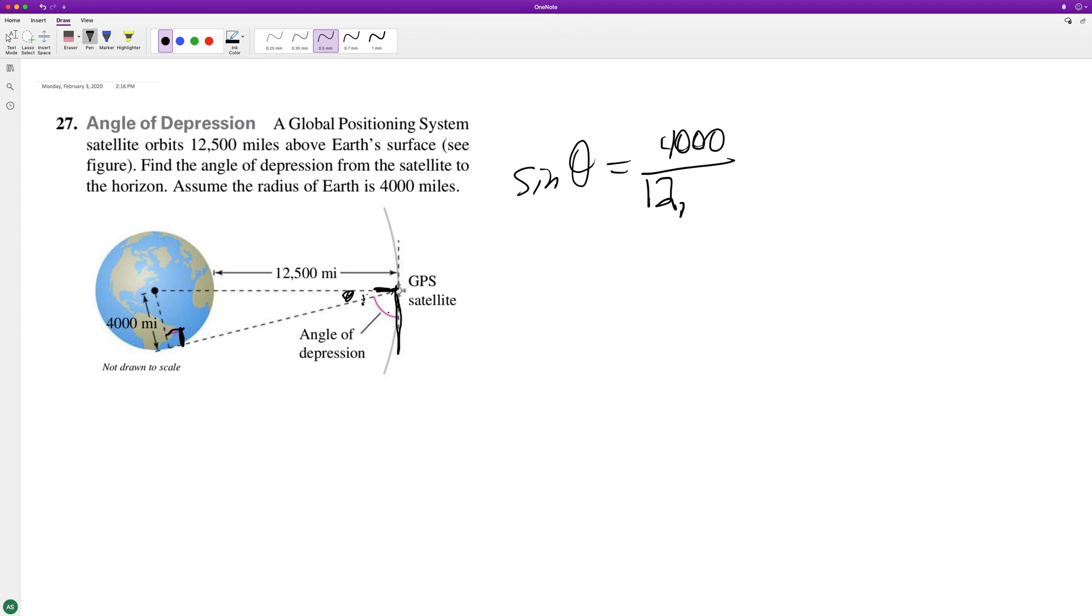The hypotenuse is 12,500. So theta is going to be equal to inverse sine of that, which is approximately 18.66 degrees.